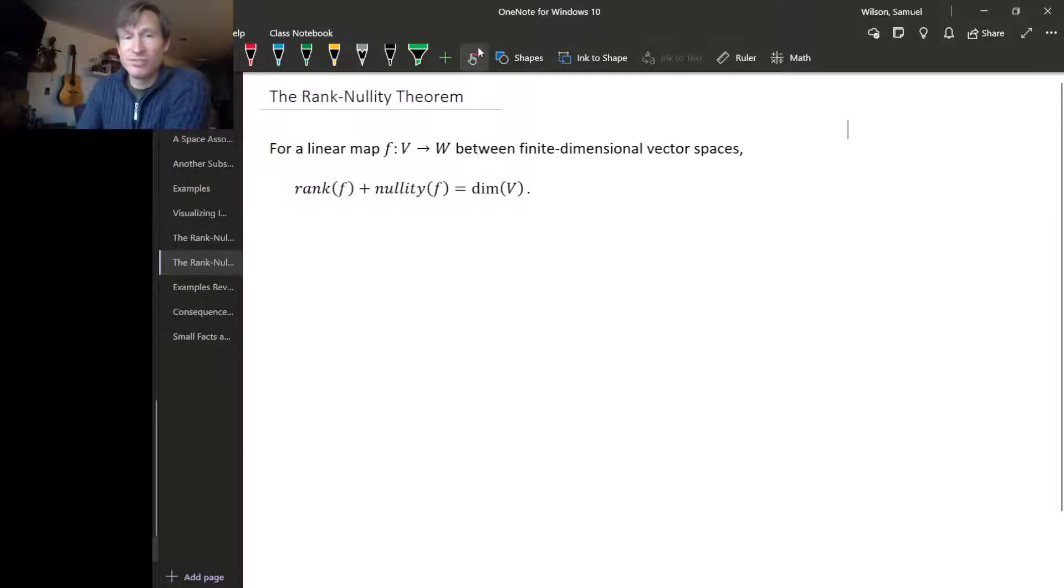So we figured out this kind of surprising result that we call the Rank-Nullity Theorem. If you have any linear map between finite dimensional vector spaces, the rank of that map plus the nullity of that map is equal to the dimension of the domain space.